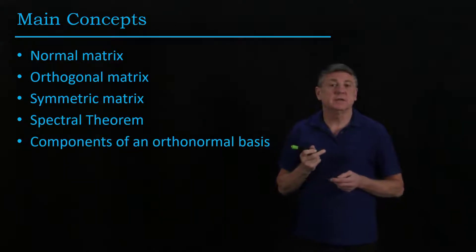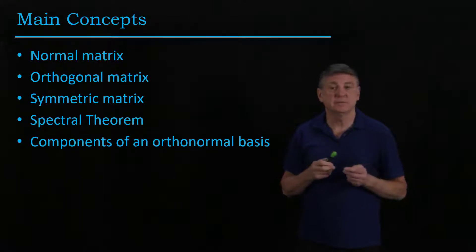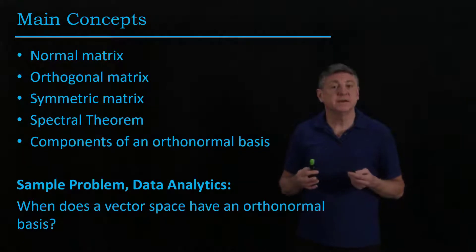We'll discover that from the spectral theorem we can find the components of an orthonormal basis for the column space of a matrix. One problem that we can think of as we go through this lecture is when does a vector space have an orthonormal basis?